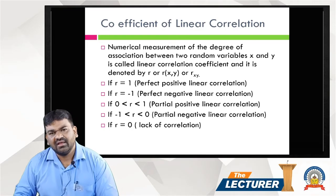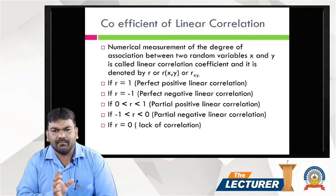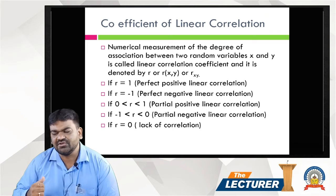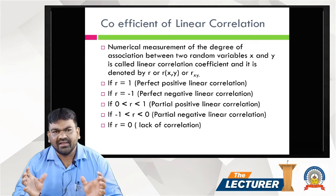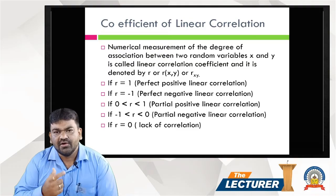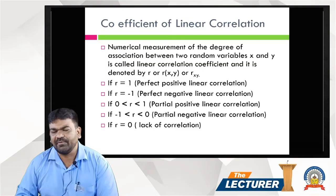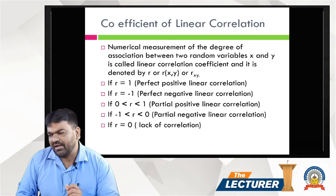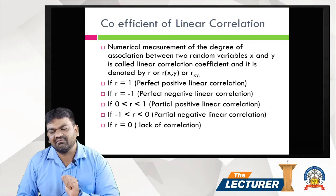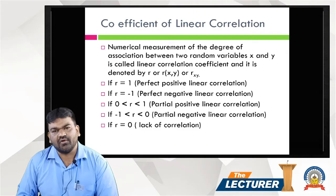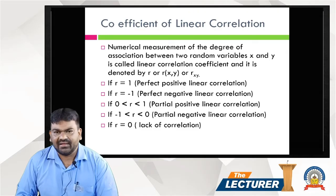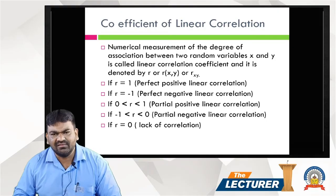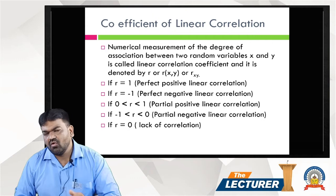The longer the rainy season, the more raincoats are sold. This is the basic definition of linear correlation. Next, the Coefficient of Linear Correlation — to measure correlation, a measurement is used. The coefficient of linear correlation is the numerical measurement of how much relation exists between two variables. It is denoted by small r, also written as r(xy), meaning the correlation between x and y.